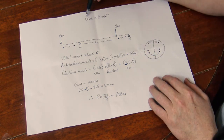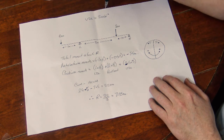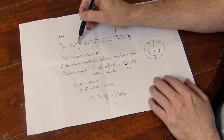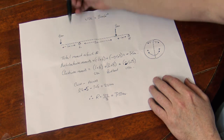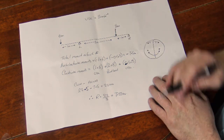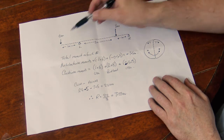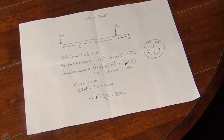This beam has what's called a uniform distributed load of 3 kilonewtons per metre — that's what the minus one means. So for every metre of beam we get 3 kilonewtons. We also have two point loads, which are 8 kilonewtons and 6 kilonewtons.